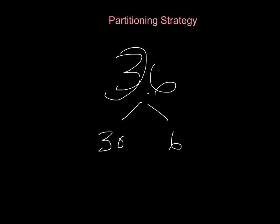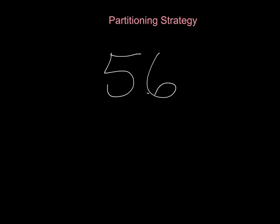The 3 in 36 represents 3 tens, and the 6 is 6 ones. Let's try that one more time. 56 — if I break that up into its place value spots, I get 50 and 6. If you understand how to break numbers up like this, you're ready to move on and use the partitioning strategy to multiply bigger numbers.